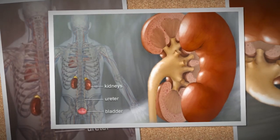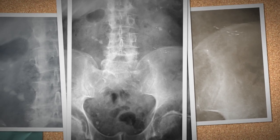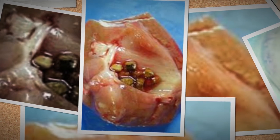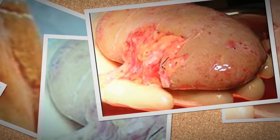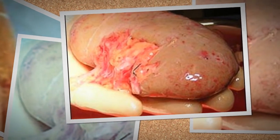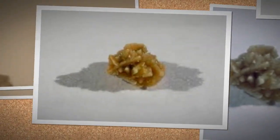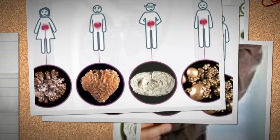Kidney stones, also called renal calculi, are solid concretions or aggregations of crystals of dissolved minerals in urine. The calculi form inside the kidneys or bladder. The most common types are composed of calcium oxalate crystals. Other types are composed of struvite, magnesium ammonium and phosphate, uric acid, calcium phosphate, and cysteine. Kidney stones are one of the most painful and most common disorders of the urinary tract.